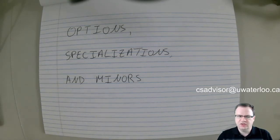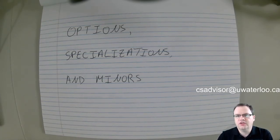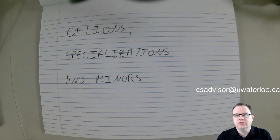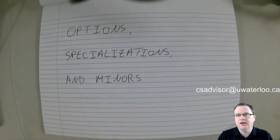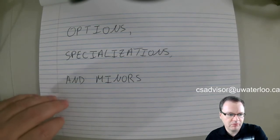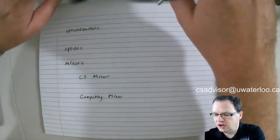Let's start with options and specializations. Until recently, all of the designations that you could get as part of a CS degree were called options. So for example, there was the software engineering option or the AI option and so on. A couple of years ago, the university went through a process to standardize the meanings of the terms option, specialization, and minor. And in CS we renamed our plan components to match these new definitions.